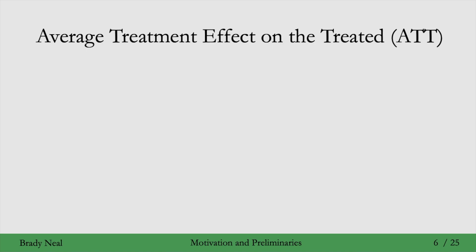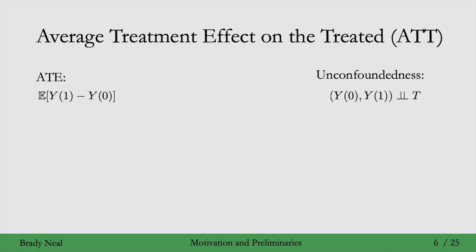But before we do that, there's one important preliminary that we haven't seen yet in the course, which is the average treatment effect on the treated. We've seen the average treatment effect, and under the unconfoundedness assumption — where the potential outcomes are both independent of treatment, or equivalently there's no backdoor path from T to Y in the causal graph — we can get the ATE as just the difference in conditional expectations in the treatment group versus the control group.